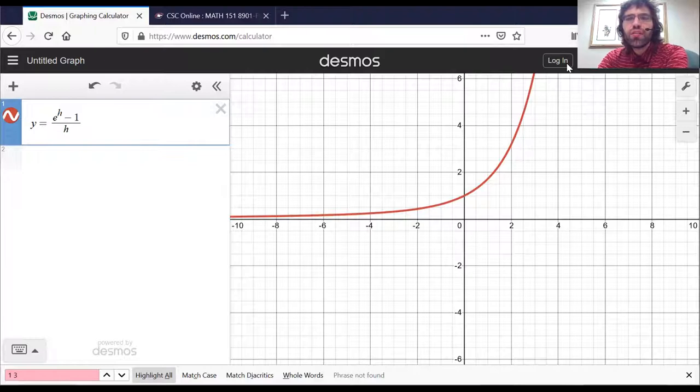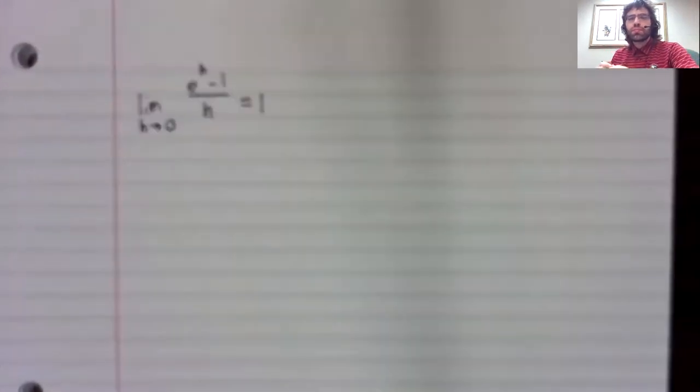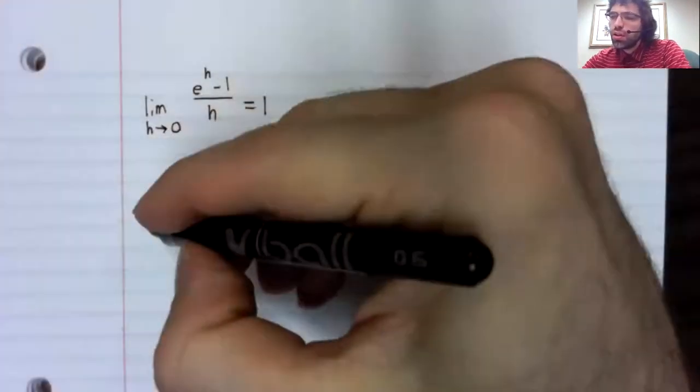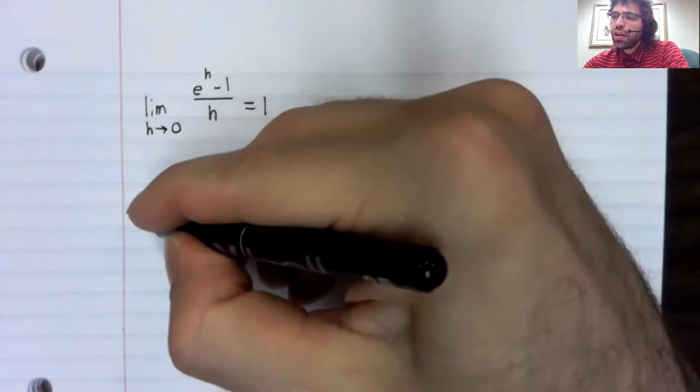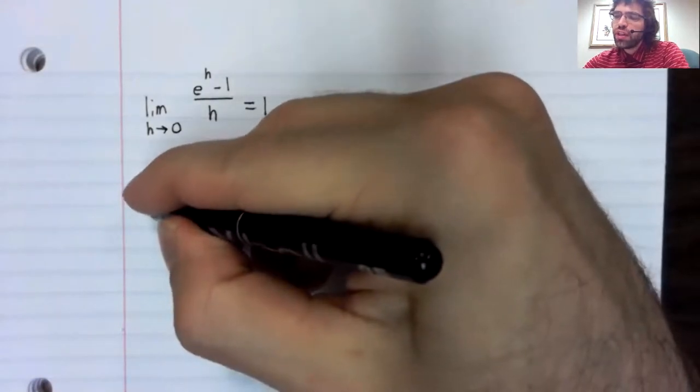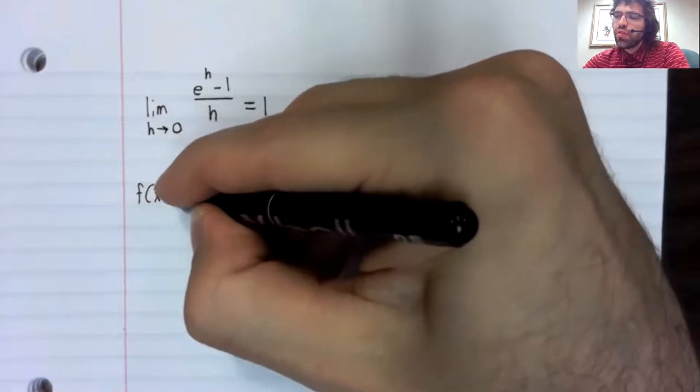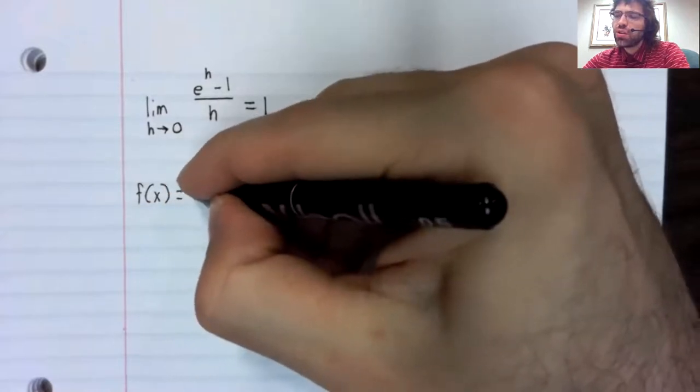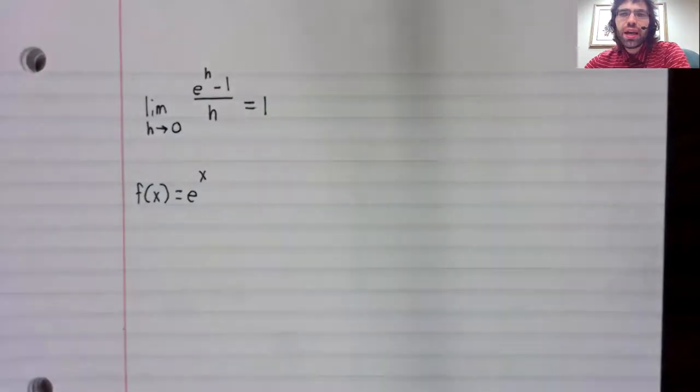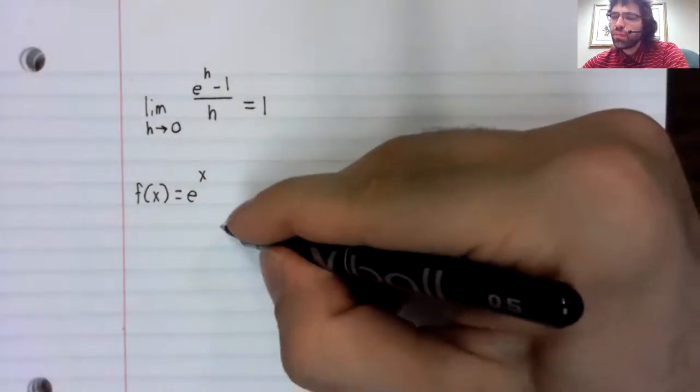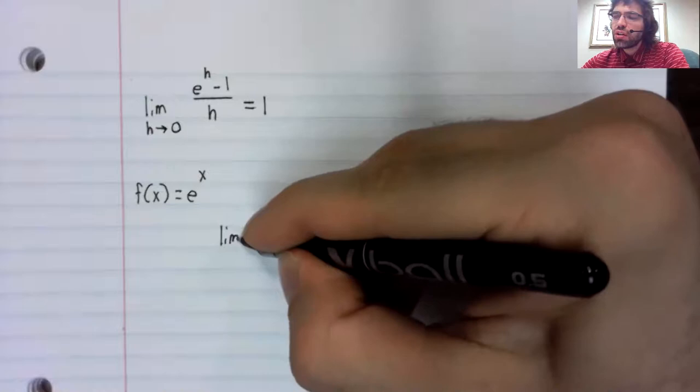So, if we're willing to buy that this limit is true, then I can find the derivative of f of x equals e to the x using the limit definition of the derivative.